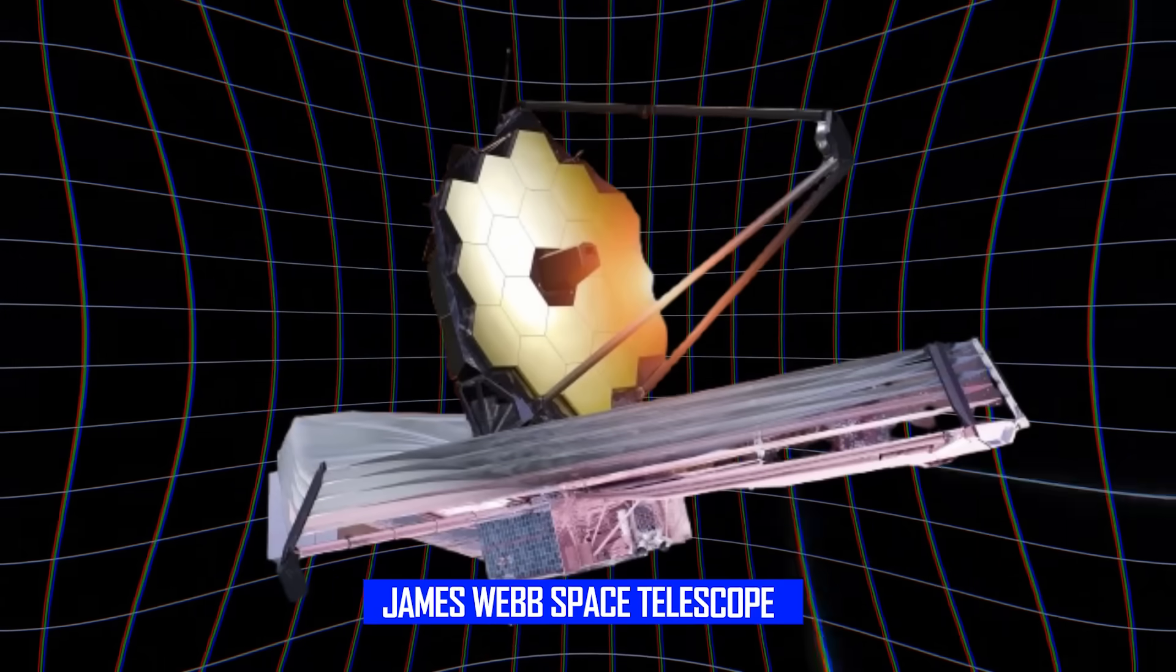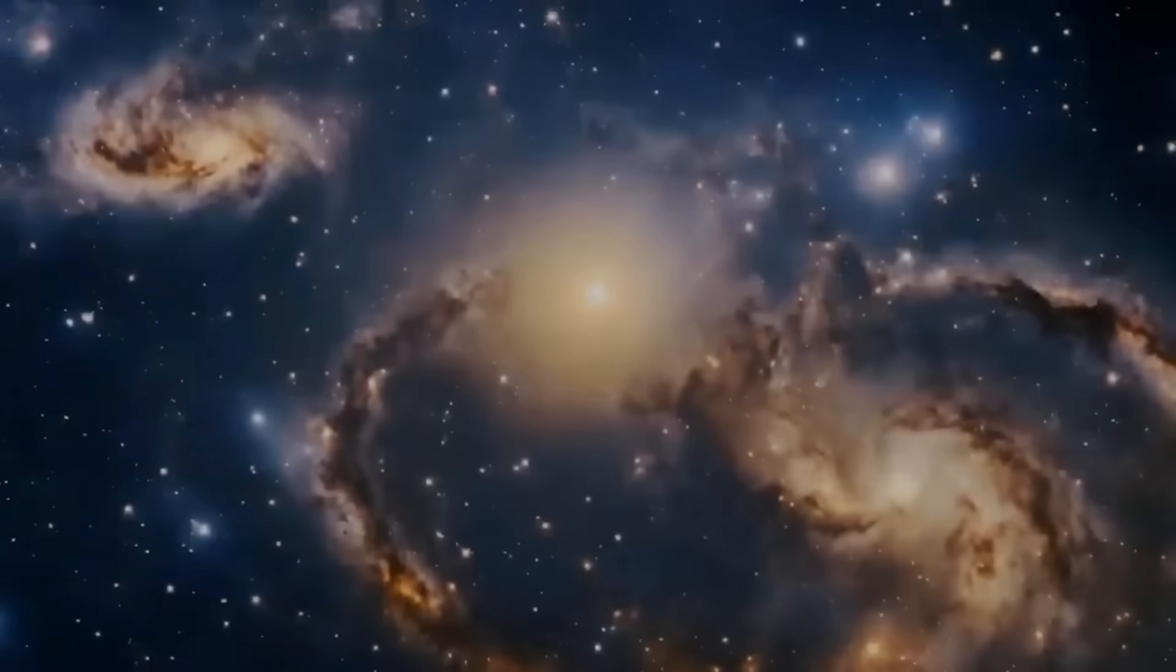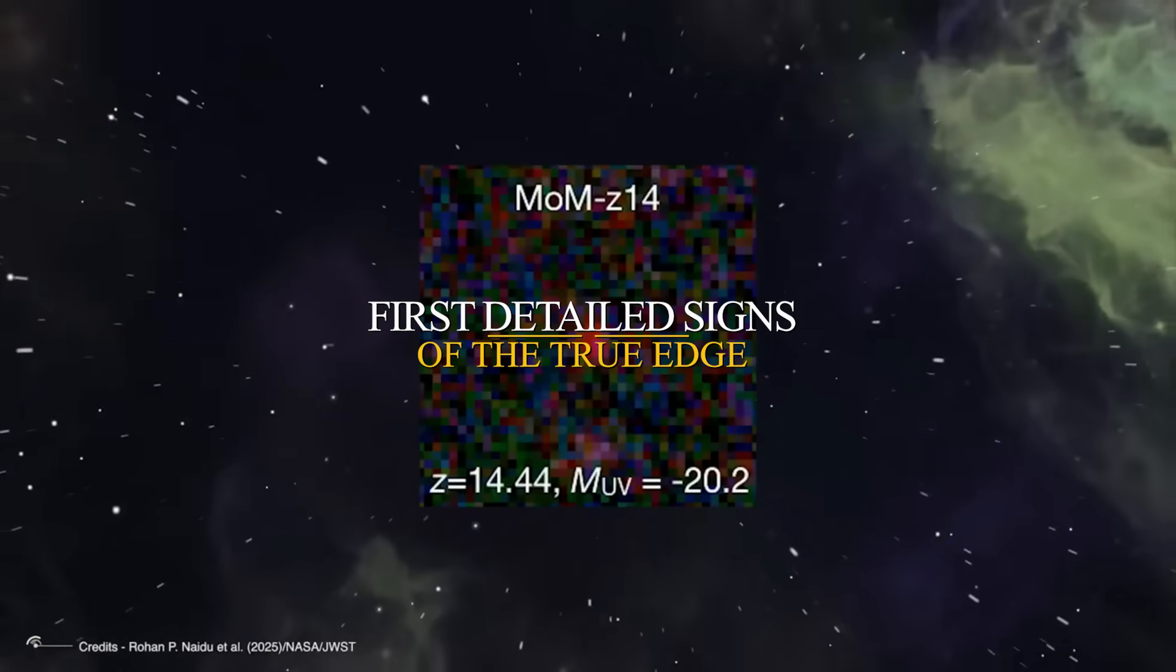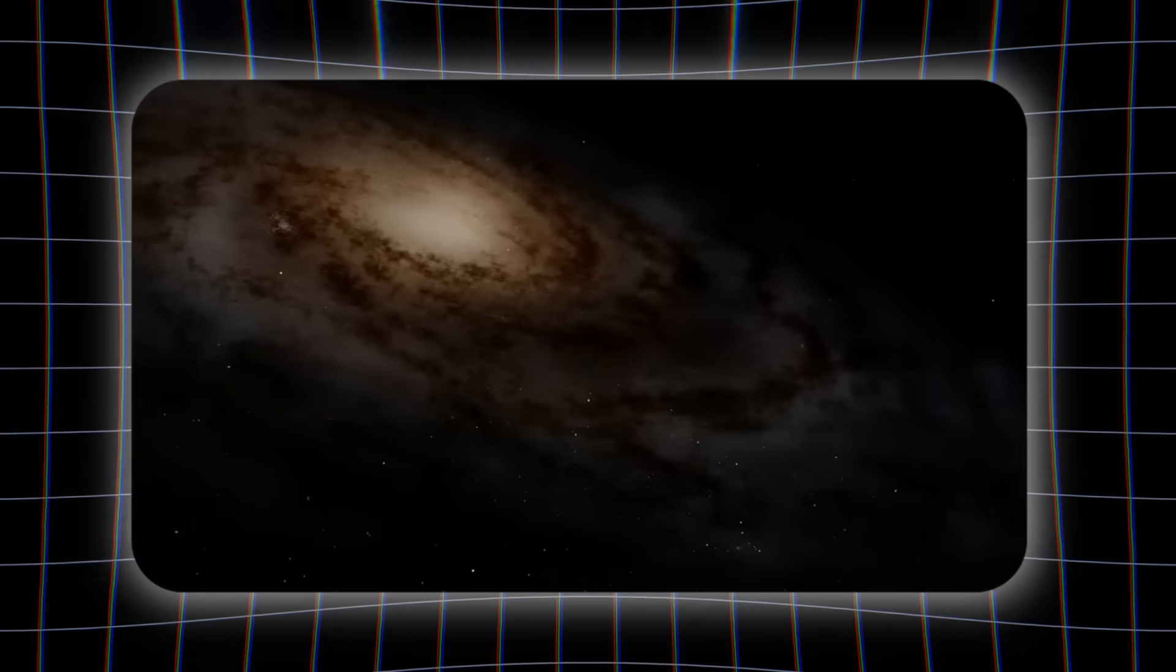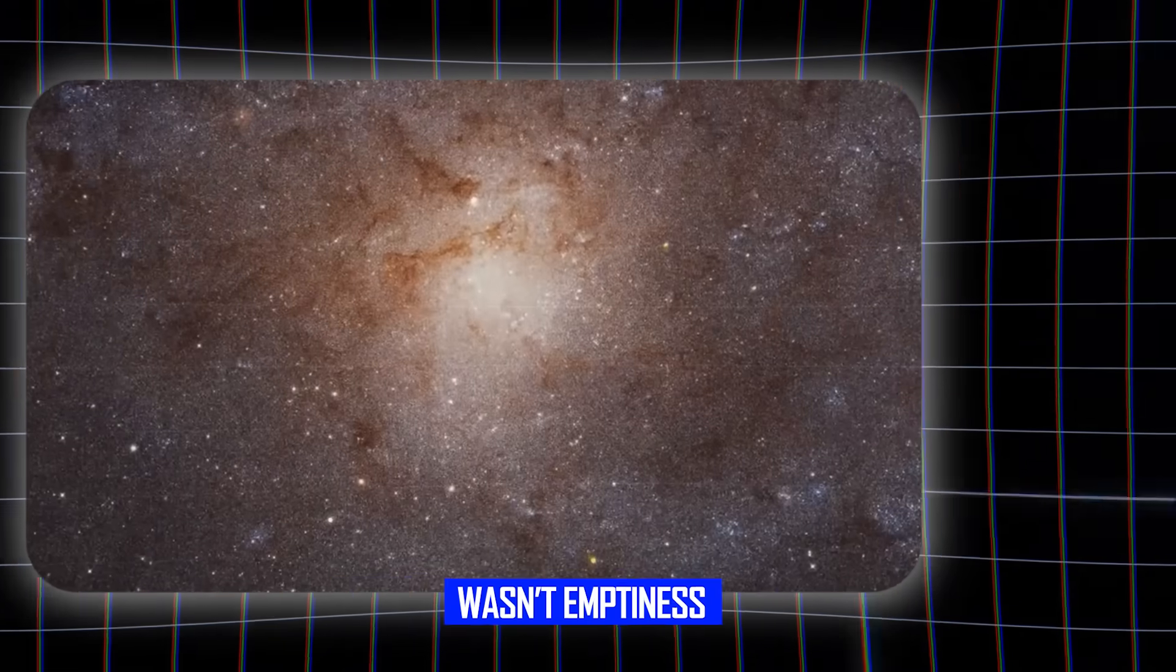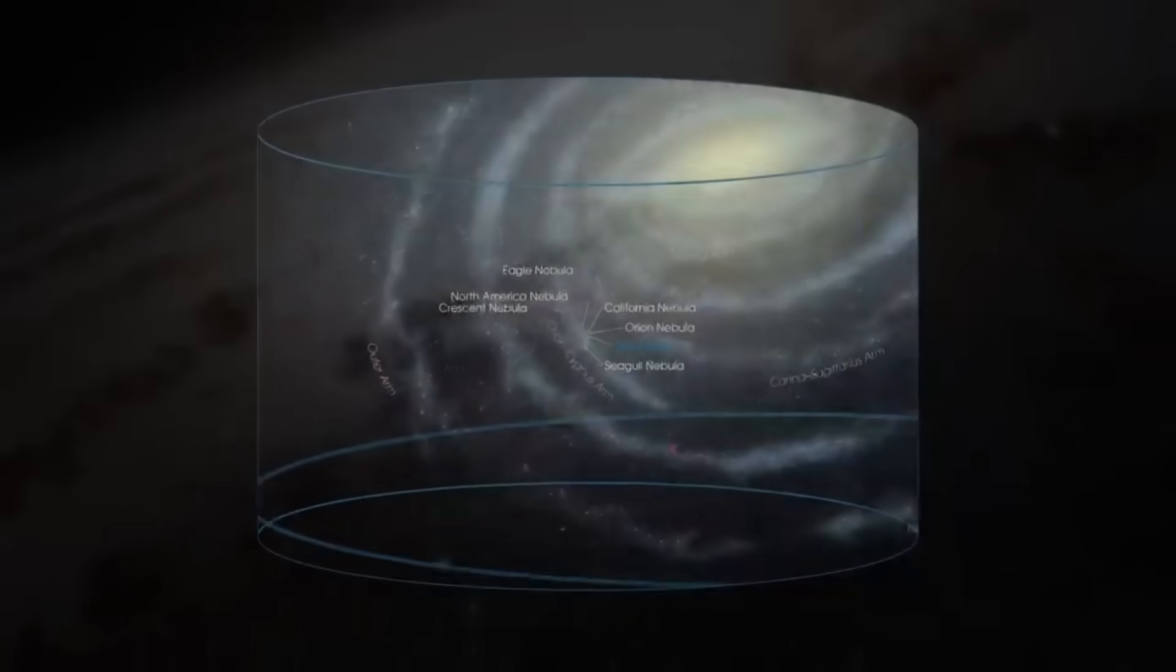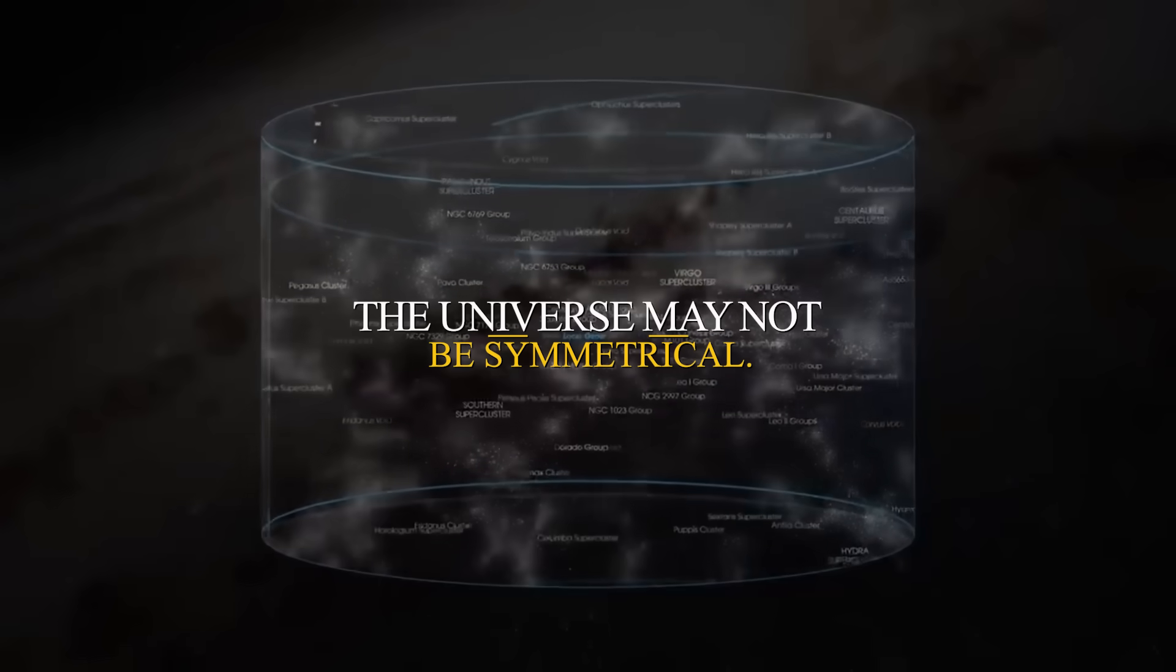The James Webb Space Telescope just delivered data that has scientists scrambling to rewrite our cosmic playbook. It didn't just map ancient galaxies. It mapped what may be the first detailed signs of the true edge of the observable universe. And what it revealed wasn't emptiness. It was structure, clusters, movement, and something even more disturbing. The universe may not be symmetrical.